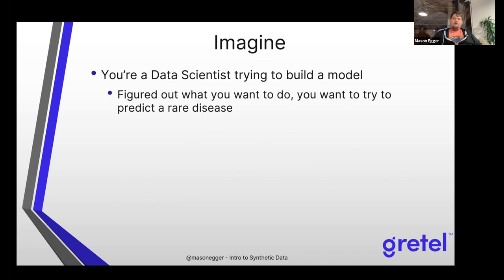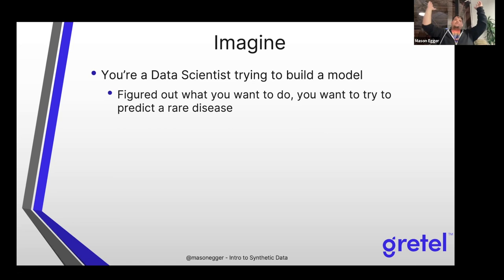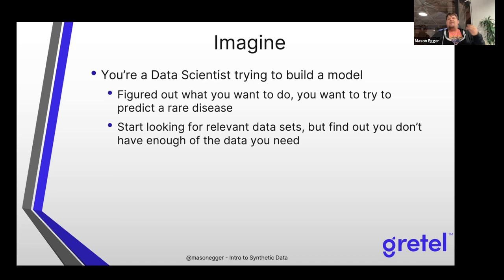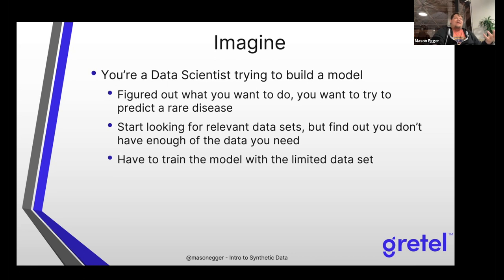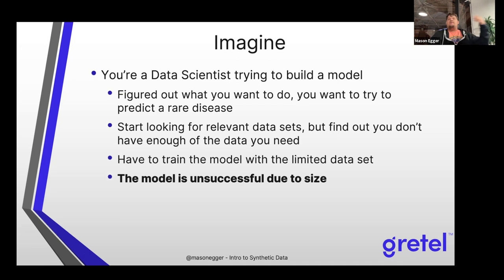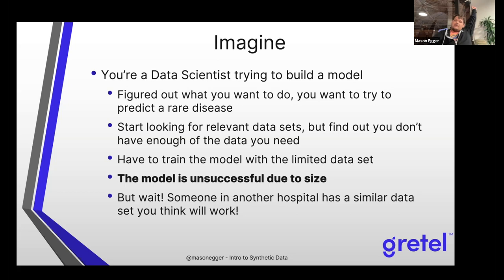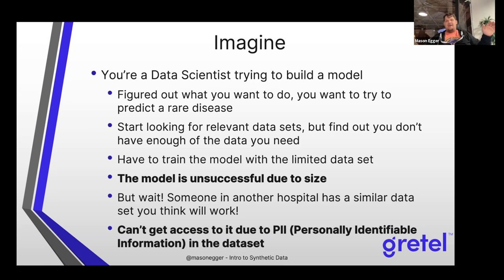Now the other spectrum: you're a data scientist trying to build a model to predict a rare disease using patient vitals. You start looking for relevant data sets but find you really don't have enough data. You train the model anyway, and it's unsuccessful. Then another hospital around the corner has studied the exact same thing — but you can't share because all that data has PII in it. Personally identifiable information is protected by the government. Your dreams are dashed.